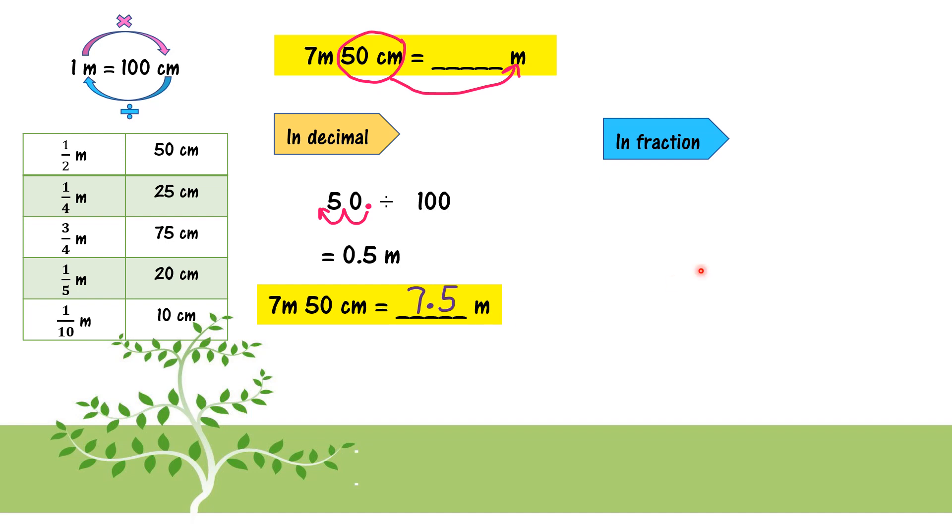Now, how to convert to meters in fraction. Same, what we need to convert is 50 cm. So I write down 50 cm. And then, you can refer. If you already memorize, you will straight away get this one. 50 cm is equal to 1 over 2 meter. So after that, you just combine with the 7 meter. So the answer is 7 and 1 over 2 meters.